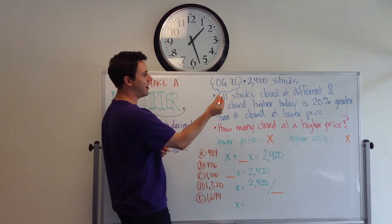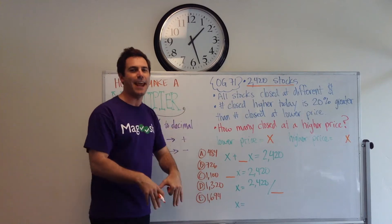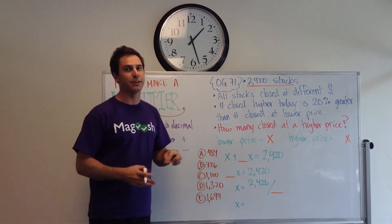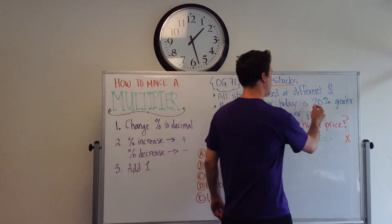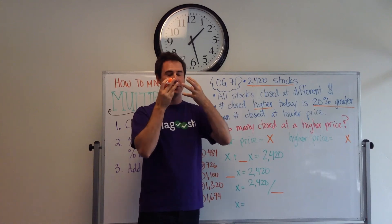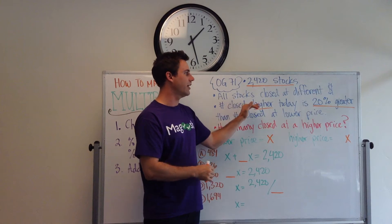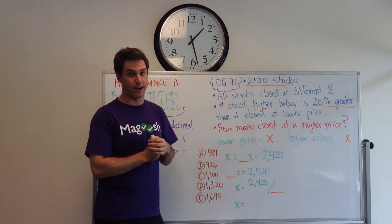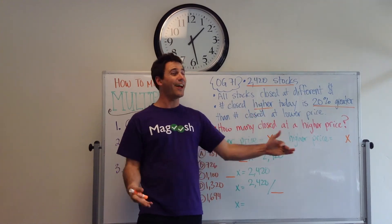In this question, we have 2,420 stocks. That's what we're told. And we're told that all of the stocks closed at a different price today than yesterday. Then we're told the useful information. The number of stocks that closed higher today is 20% greater than the number that closed at a lower price. They're saying the ones that closed today closed higher. The number that closed higher was 20% greater. So there's 20 more stocks that closed at a higher price than the ones that closed at a lower price. So, the question is, how many stocks closed at a higher price? We're going to need to use a multiplier in this question.